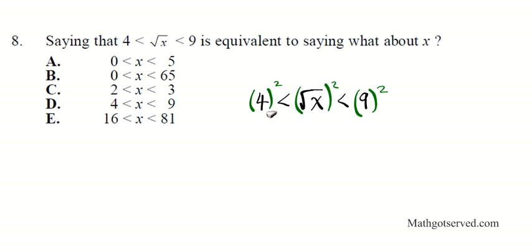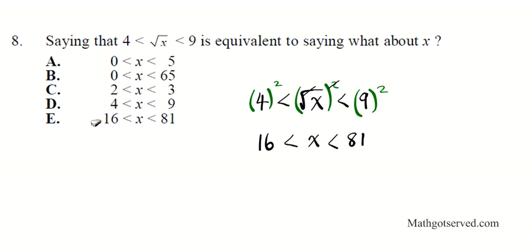Squaring all three parts, we get 16 is less than x — since squaring and square roots are inverses they cancel out — and 9 squared is 81. So the answer to number 8 is B.